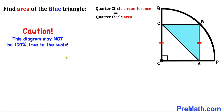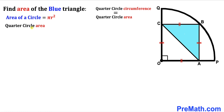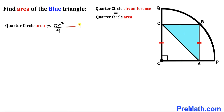Keep in mind that this figure may not be 100% true to scale. The area of this quarter circle equals the circumference. Recalling the area of a circle formula: Area = πr², so the quarter circle area is πr² divided by 4. Let's call this Equation 1.